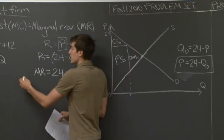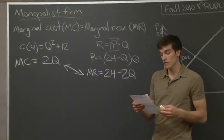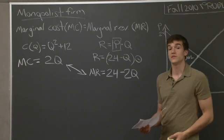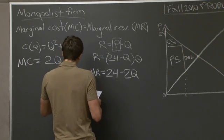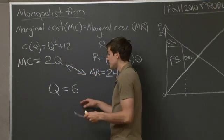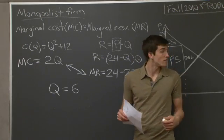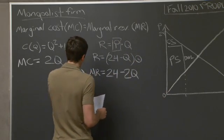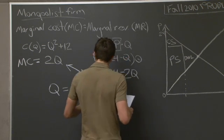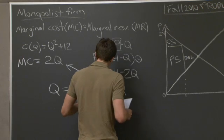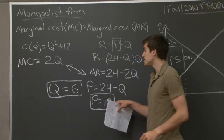Now we set marginal revenue equal to marginal cost to find the quantity produced at the monopolist outcome. Setting 24 minus 2q equal to 2q and solving for q, we find that quantity equals 6. Then plugging back into the demand curve p equals 24 minus q, the monopolist price is 18.